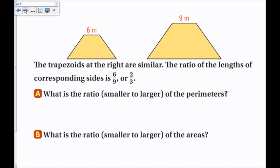The trapezoids above are similar. The ratio of the lengths of the corresponding sides is 6 to 9, or simplified, 2 to 3. What is the ratio of their perimeters? It's the same as the scale factor: 2 to 3. What is the ratio of their areas? It's the scale factor squared: 2 squared over 3 squared equals 4 to 9.